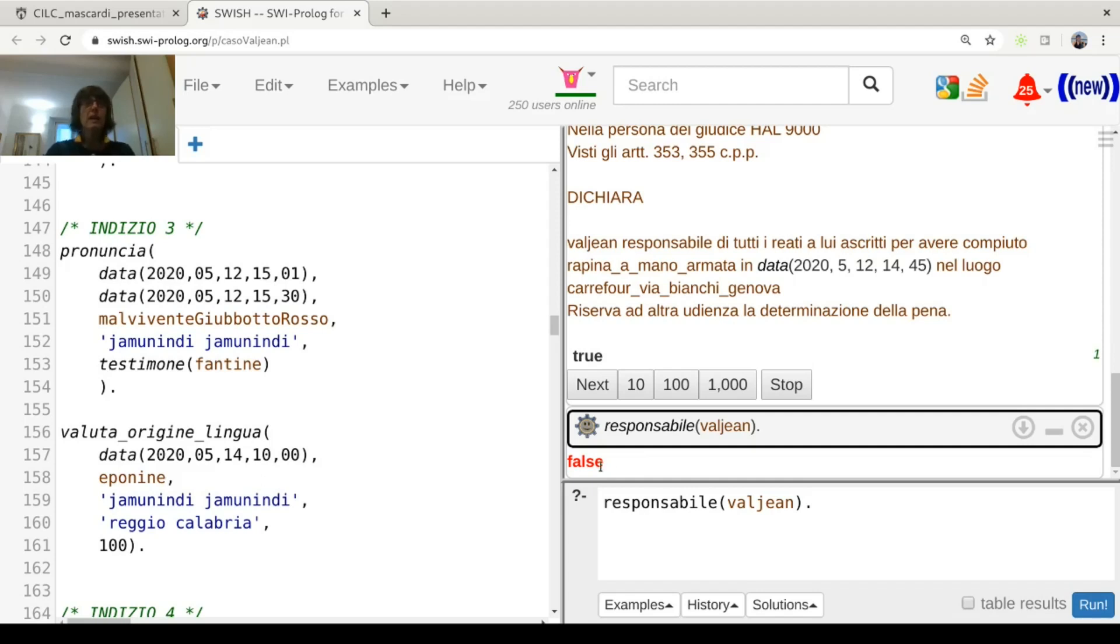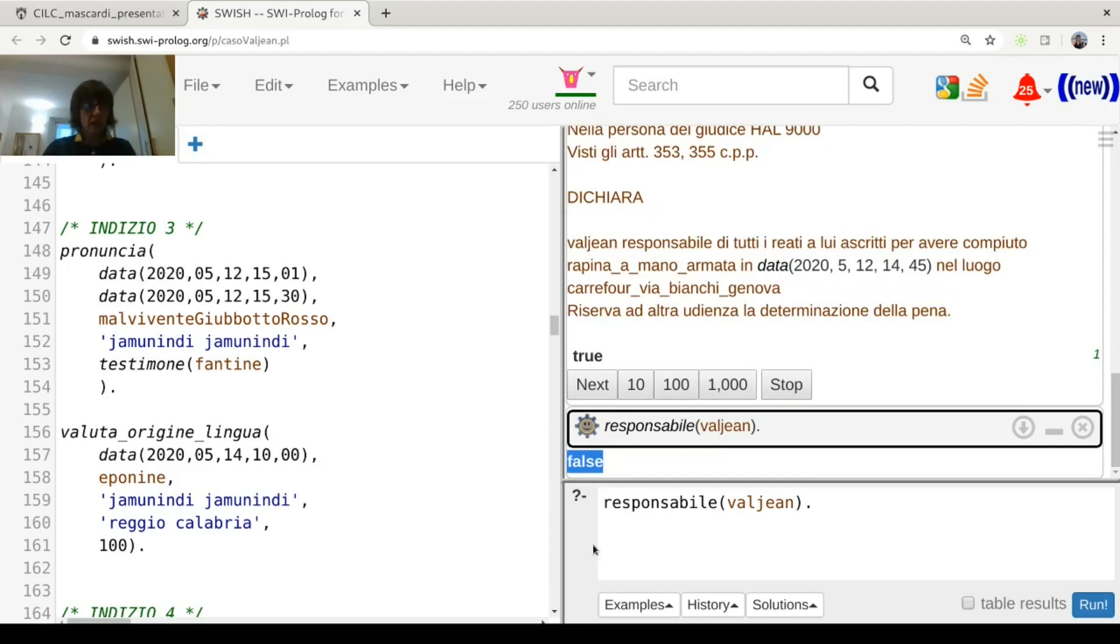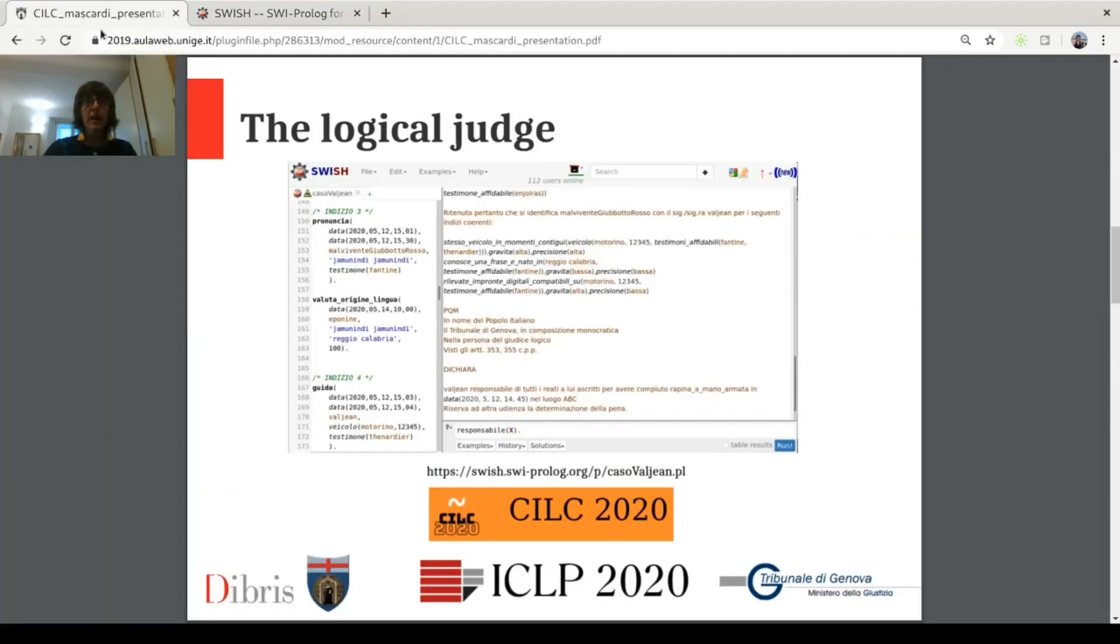So, the real setting is this one without the evidences 4 and 5. And actually, with the real evidences, it could not be possible to state, okay, Valjean is the criminal. Because the fact that a fingerprint was there in some vehicle used for the crime does not mean that that person left the fingerprint that very day of the crime. It might have left it a few days before. And also, well, saying yamu ndi is not a unique identifier for stating this person is that person, of course. So, the evidences were not strong enough and the magistrate had to acquit that person that was supposed to be the criminal. And this is exactly what we were able to model.